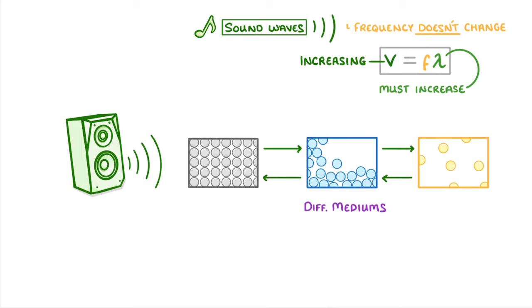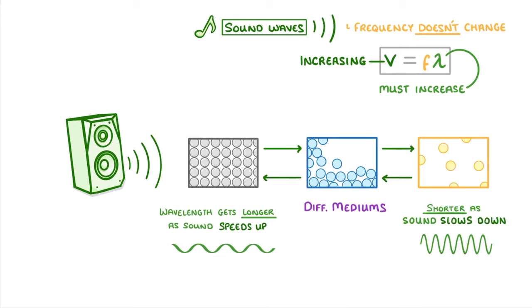So the point to remember is that the wavelength gets longer as sound speeds up, which happens in higher density mediums like solids, whereas the wavelength will get shorter as the sound slows down in low density materials like air.